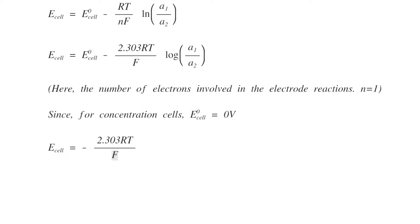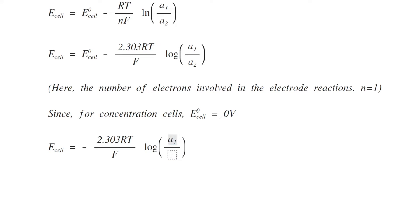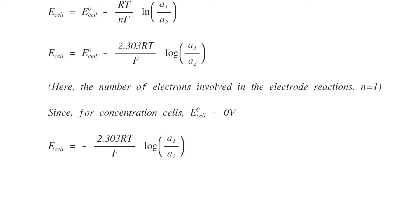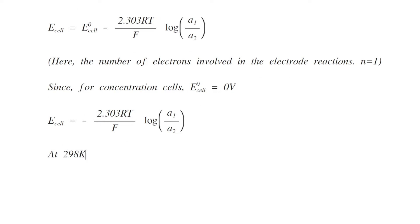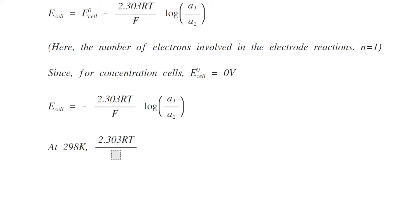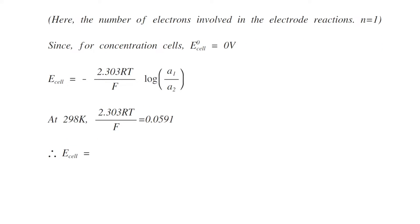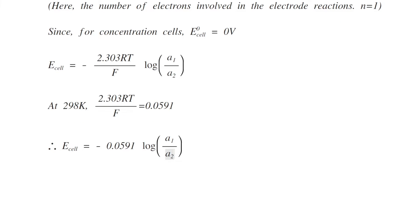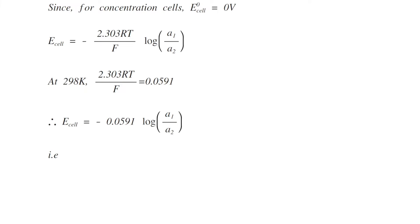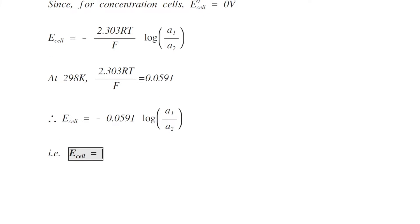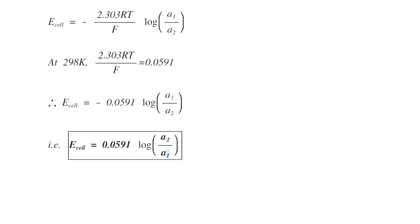Substituting E°_cell = 0: E_cell = −(2.303 RT/F) log(A1/A2). At standard conditions, i.e., 298 K, 2.303 RT/F equals 0.0591. Therefore E_cell = −0.0591 log(A1/A2). Inverting the ratio to remove the negative sign, the final Nernst equation becomes: E_cell = 0.0591 log(A2/A1).